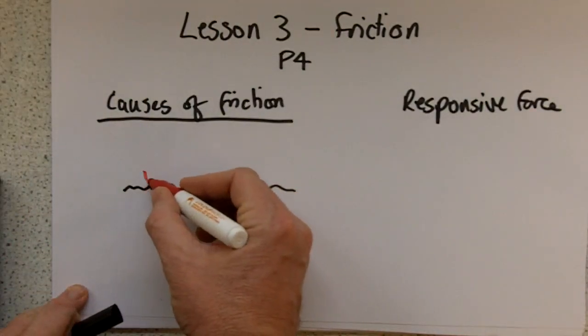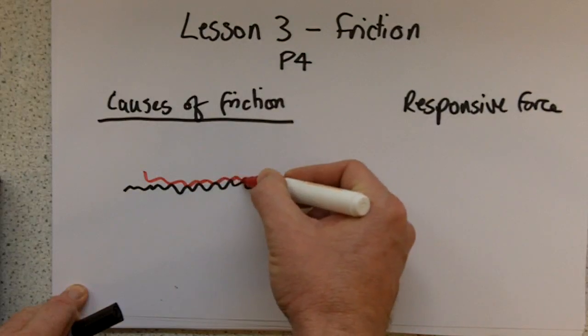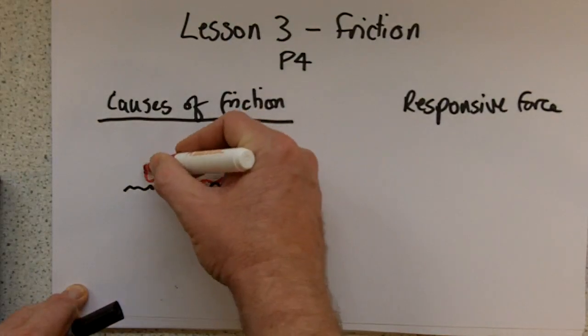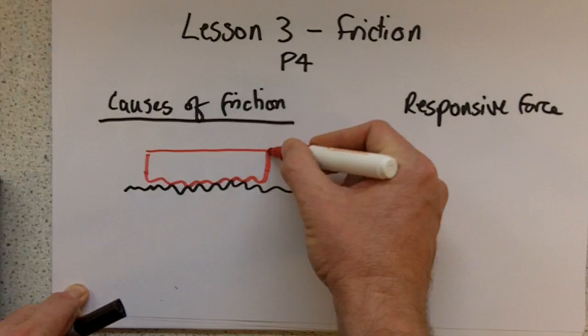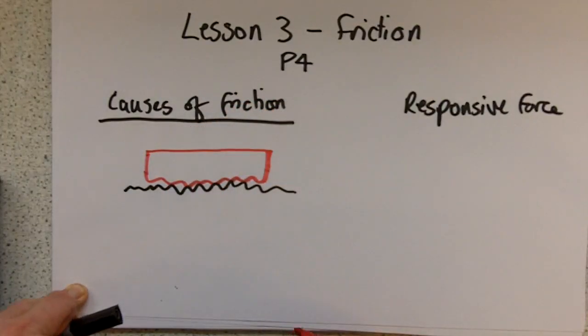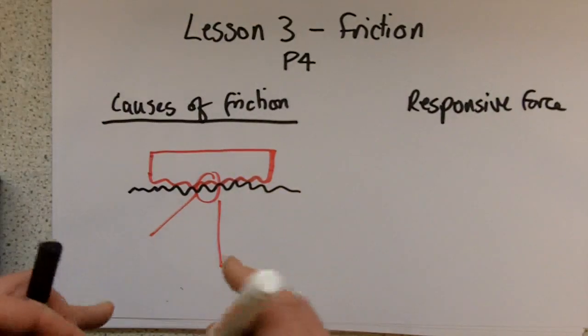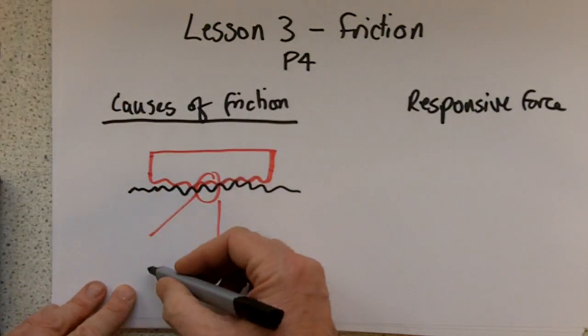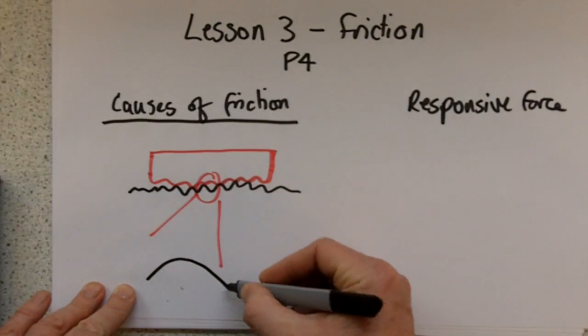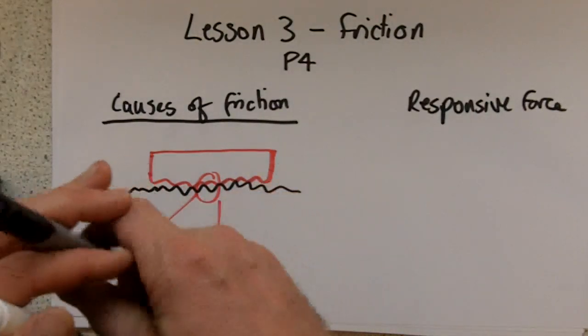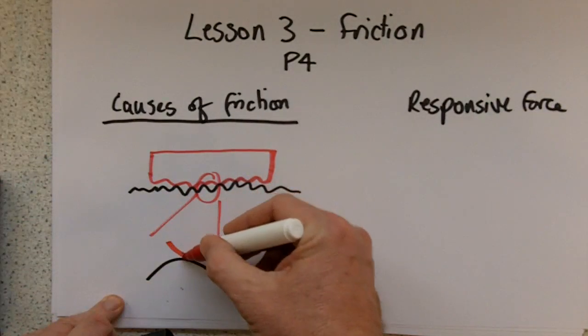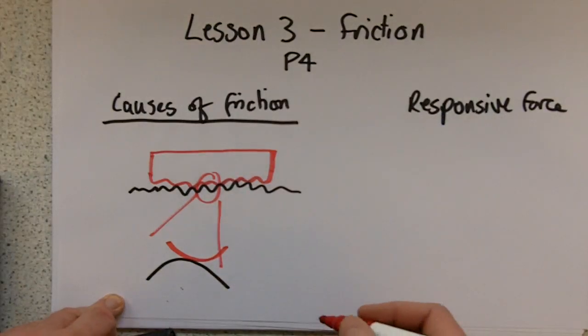Now when you put another material on top of that and attempt to slide it, then that surface, which is also rough, will interact with the lumps and bumps on this surface. Now, if we zoom in on one particular part, what we see is that we might have one big lump from the bottom, and from the top surface, another big lump.